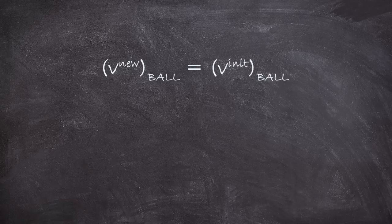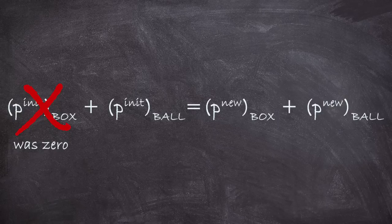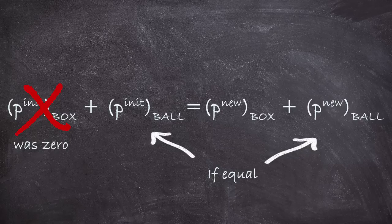However, we can see that if that were the case, the only way momentum could be conserved, and the initial and final ball had the same momentum, is if the box never got any momentum at all from being hit by the ball. Which, as anyone who's ever thrown a ball at another thing knows, that's not how that works.